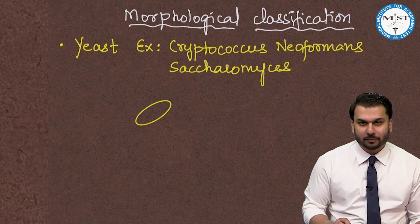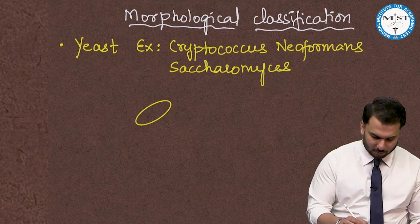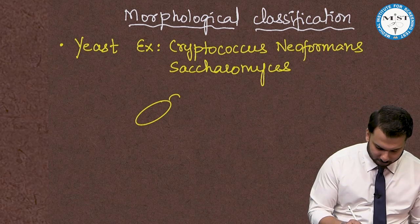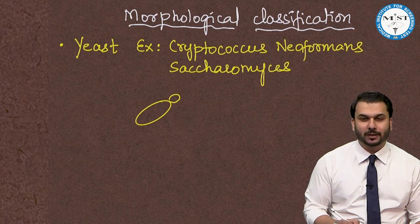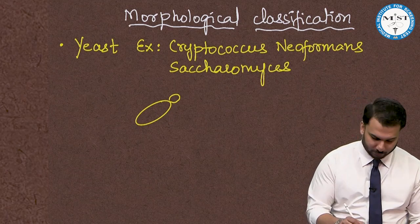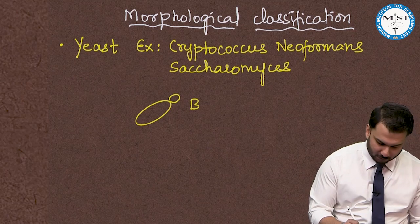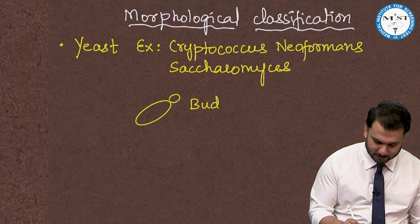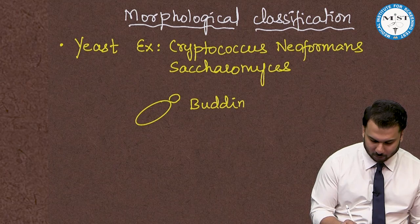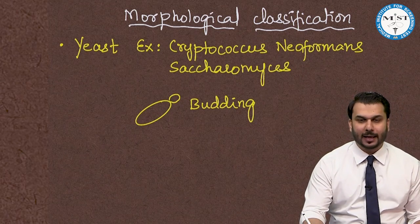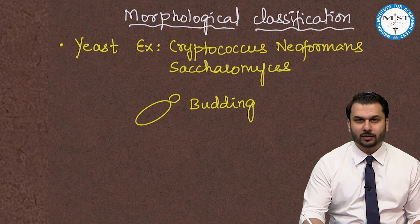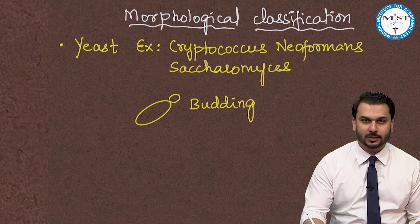From the yeast cell, a small bud starts to arise — they reproduce by a process called budding. The bud separates out later, existing as another cell. This is the key feature of yeasts.